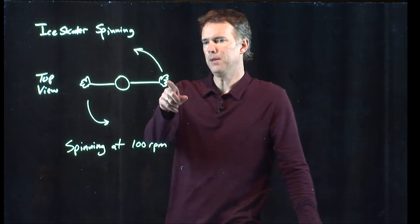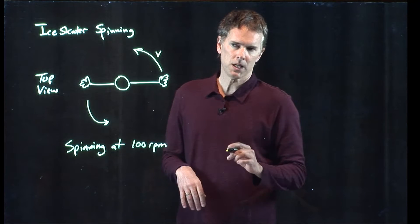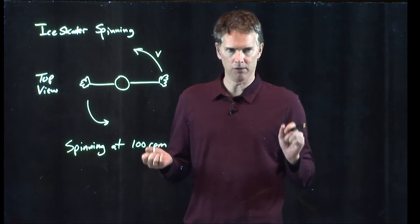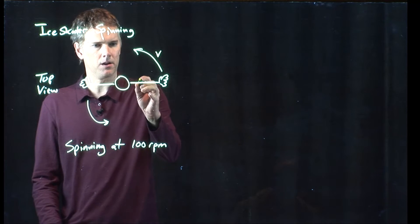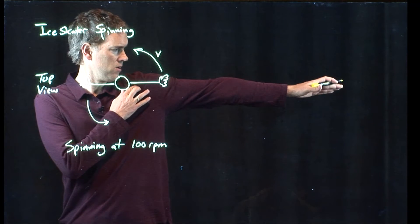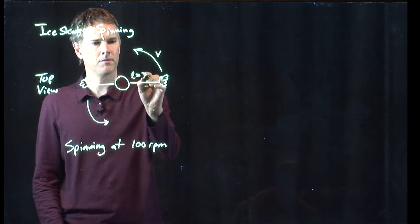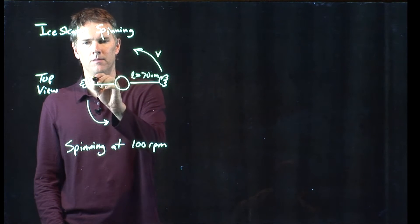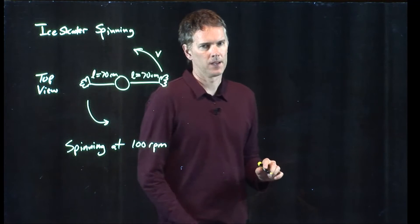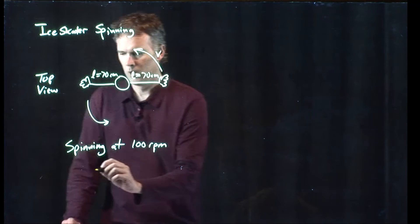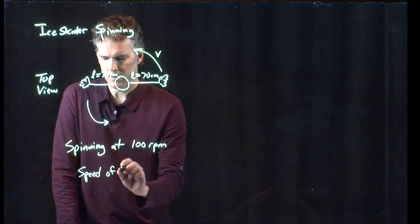Let's calculate the speed of Brian Boitano's hands as he spins. We're going to approximate this length here — the length of his arm — as 70 centimeters. So the question is: what is the speed of the hand?